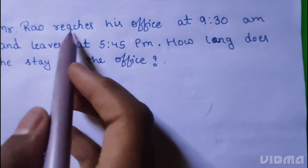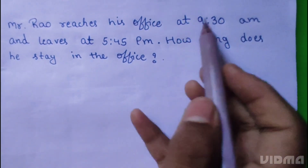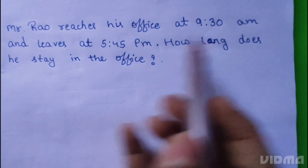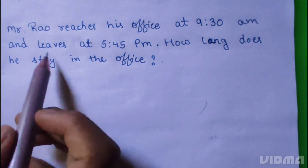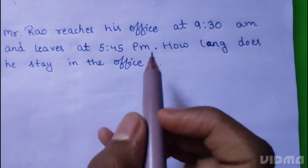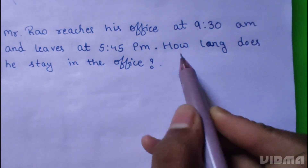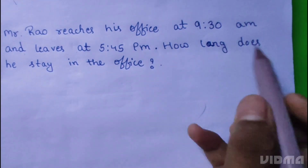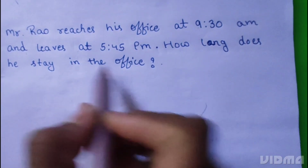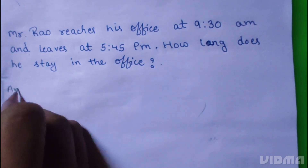Mr. Rao reaches his office at 9:30 AM and leaves at 5:45 PM. How long does he stay in the office? Answer.